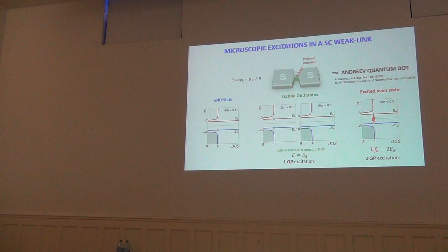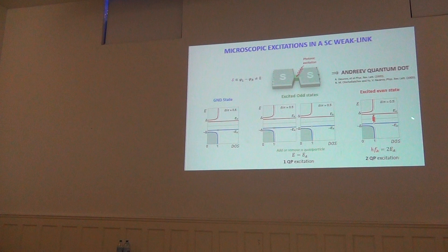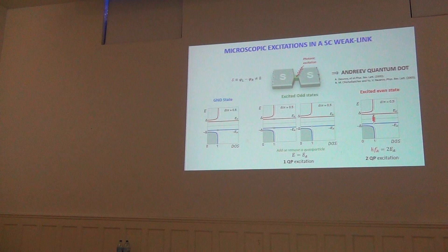This excitation costs two times EA, and the final state has the same parity as the starting state — the ground state has an even number of electrons, and the excited state also has an even number of excitations. The odd-parity state is in between. Photons can only couple the ground state with the excited state because light cannot create or destroy quasiparticles — parity must be conserved.